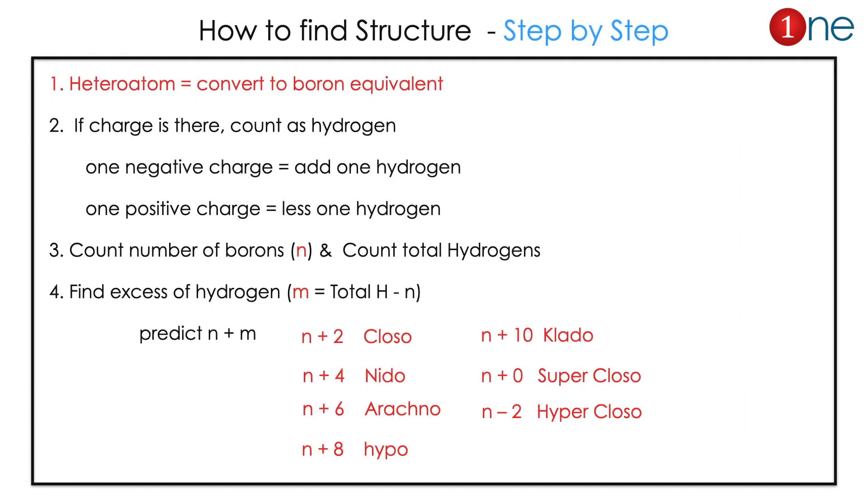How we can find the structure: First you have to convert the boron equivalent of the heteroatom. Then you have to count the hydrogen. If negative charge is there you have to add one hydrogen. Positive charge is there, you have to less one hydrogen.